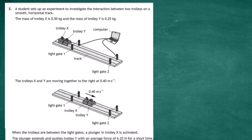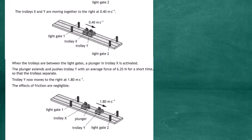Question three from section two of the 2022 Higher Physics SQA exam. A student sets up an experiment to investigate the interaction between two trolleys on a smooth horizontal track. The mass of trolley X is 0.5 kilograms and the mass of trolley Y is 0.25 kilograms. The trolleys X and Y are moving together to the right at 0.4 meters per second. When the trolleys are between light gates, a plunger in trolley X is activated.